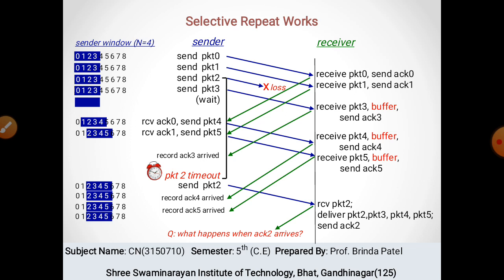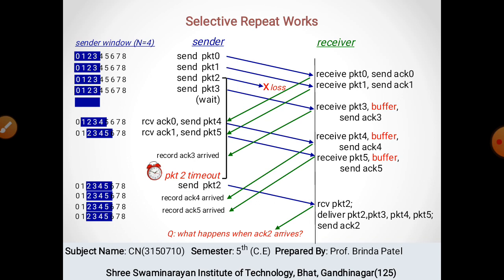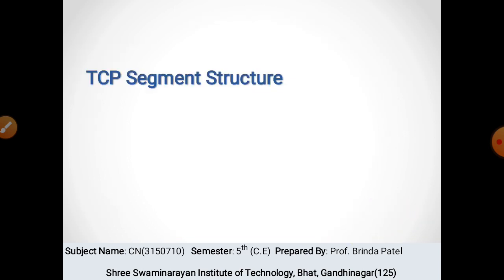Packet 2 receive होने के बाद receiver के पास packets 3, 4, 5 भी पहले से buffered हैं। जब packet 2 का acknowledgement sender को मिल जाएगा तो सभी packets — 2, 3, 4, 5 — deliver हो जाएंगे।